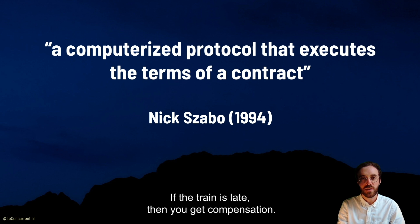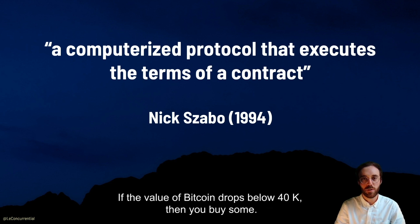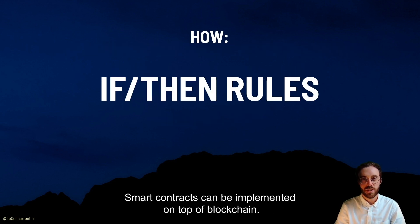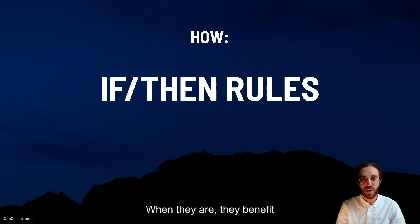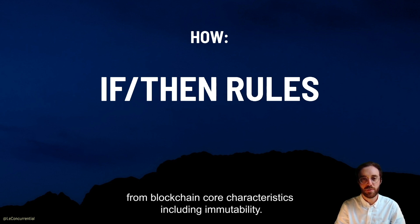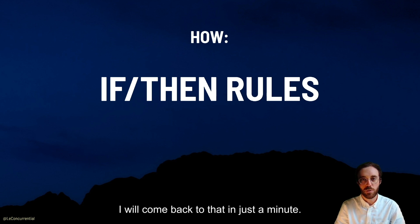If the train is late, then you get compensation. If the value of Bitcoin drops below 40k, then you buy some. Smart contracts can be implemented on top of the blockchain. When they are, they benefit from blockchain core characteristics, including immutability. I will come back to that in just a minute.